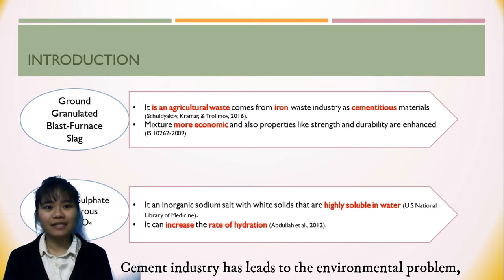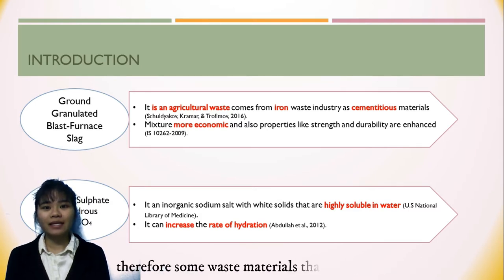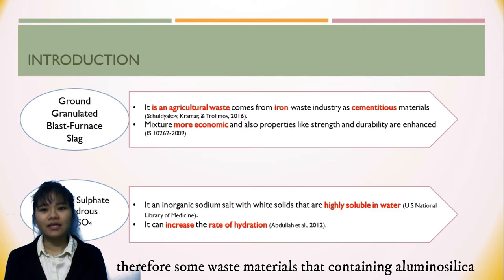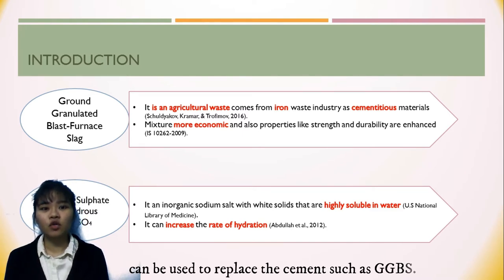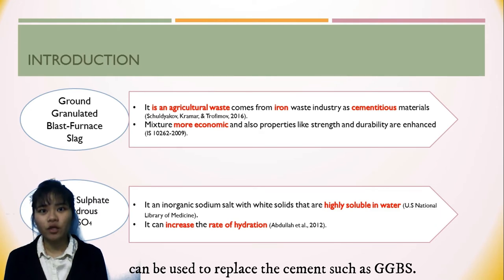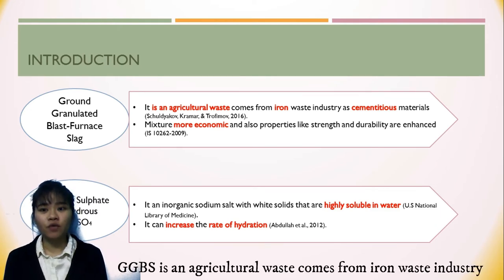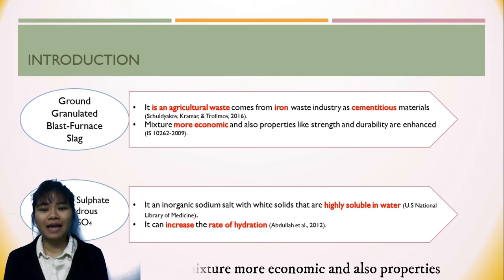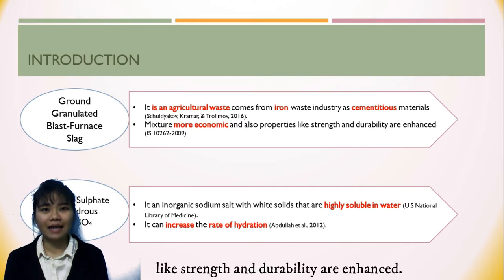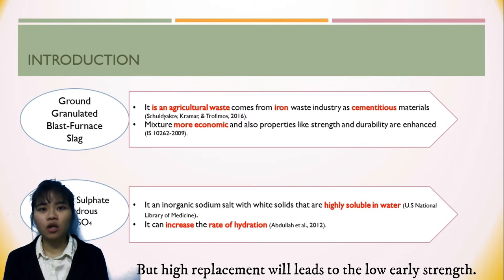The cement industry has been linked to development problems. Therefore, some waste materials that contain aluminum silica can be used to replace cement, such as GGBS. GGBS is an industrial waste from the iron waste industry used as cementitious materials. The mixture is more economical and properties like strength and durability are enhanced, but high replacement levels will lead to low early strength.